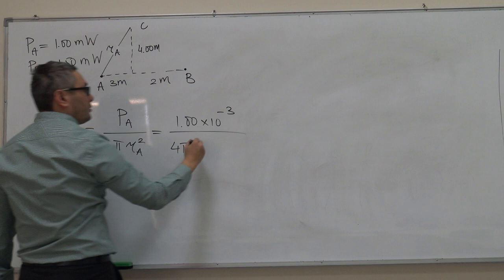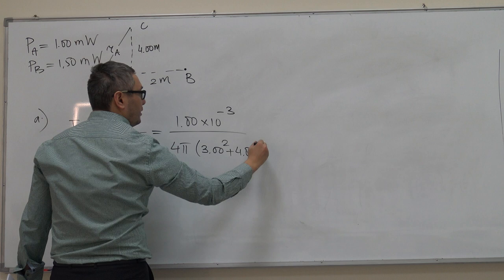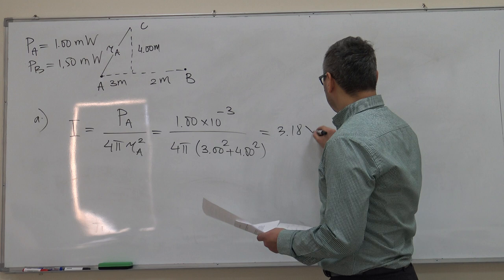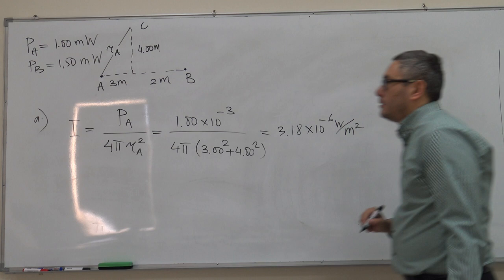So then this is equal to 3.18 times 10 to minus 6 watts per meter squared.